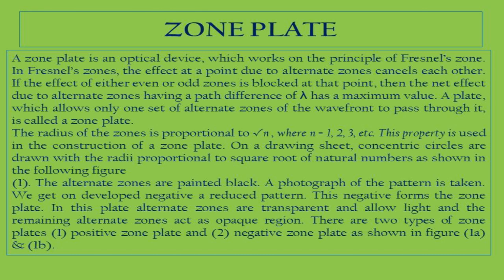The area between the first and second half period zone is blackened, and between the second and third is blackened, and so on — alternate zones are dark and transparent. We can make two types of zone plates: if we take the negative only, we get a positive zone plate; if we take the positive of the negative on a transparent sheet, we get a negative zone plate.